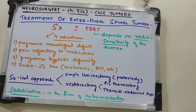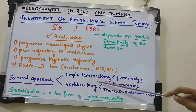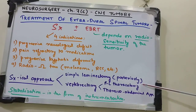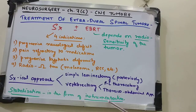Surgical approaches include a simple posterior laminectomy, vertebrectomy, lateral thoracotomy, or a thoracoabdominal approach, directed toward the tumor area. Because radical spinal oncological surgery may remove part of the vertebral body, instrumentation for stabilization is always recommended after such procedures.